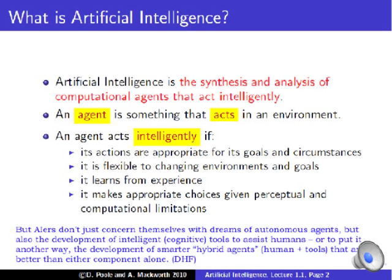Poole and Mackworth — it's their book that we typically use for this class — ask what is artificial intelligence? They say it's the field of computer science which is concerned with analyzing or understanding the nature of intelligence, as well as synthesizing or building systems. And the agents, as they say, that we're going to be building are anything that act in the environment.